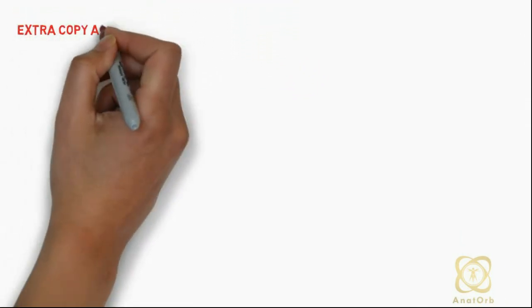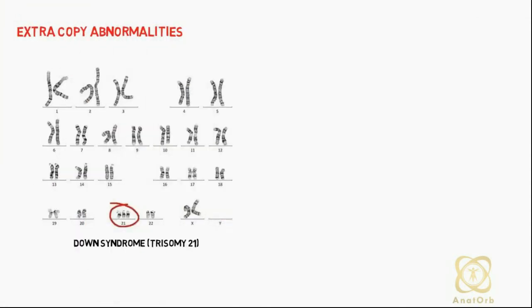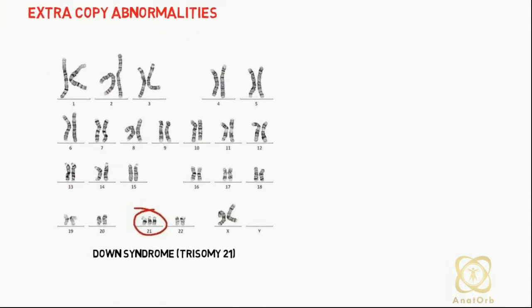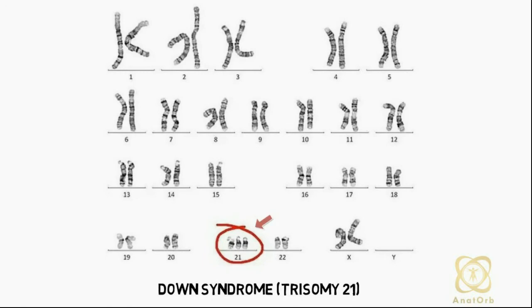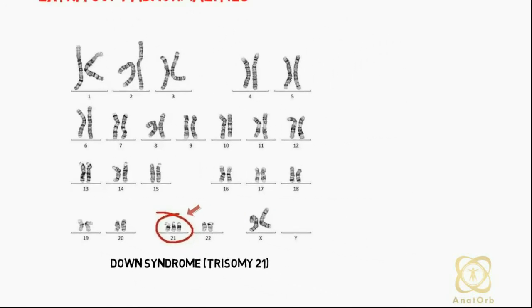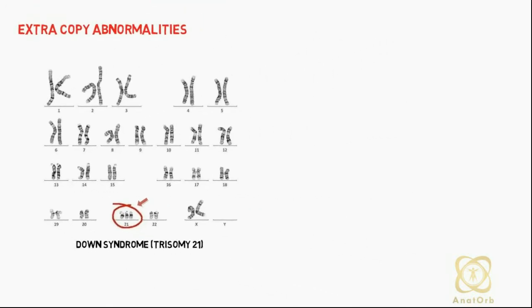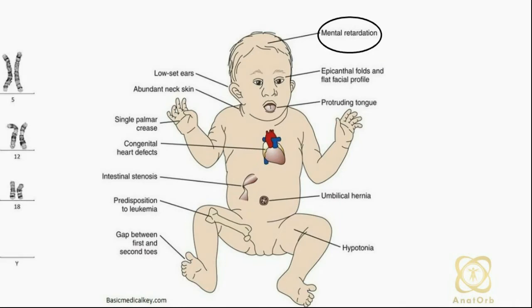An example of an extra copy abnormality is Down syndrome. Down syndrome occurs when there is an extra copy of chromosome 21, and is associated with mental retardation, congenital heart defects, and craniofacial abnormalities.